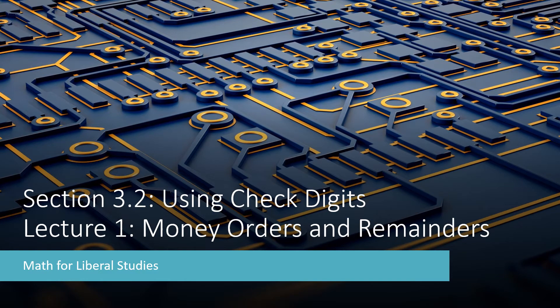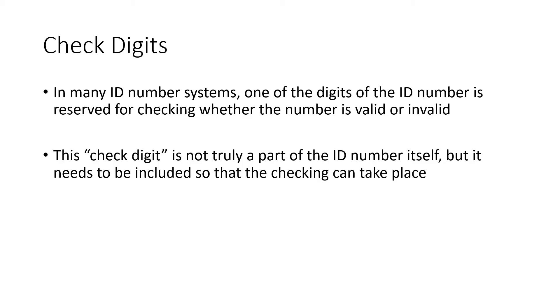This is the first video for section 3.2 on using check digits. In this lecture, I'll be talking about money orders and remainders. In many ID number systems, one of the digits of the ID number is reserved for checking whether the number is valid or invalid. This extra check digit is not truly a part of the ID number itself, but it needs to be included so that we can check to see if the actual ID number is valid or invalid.